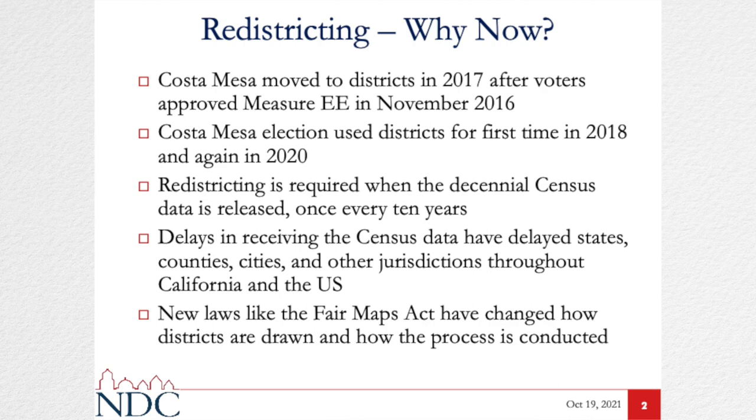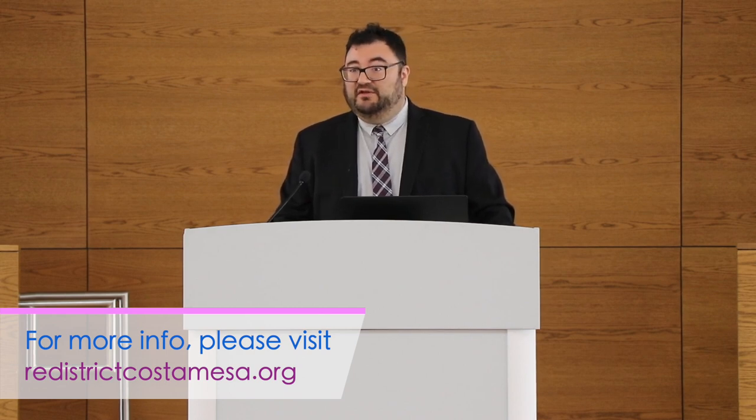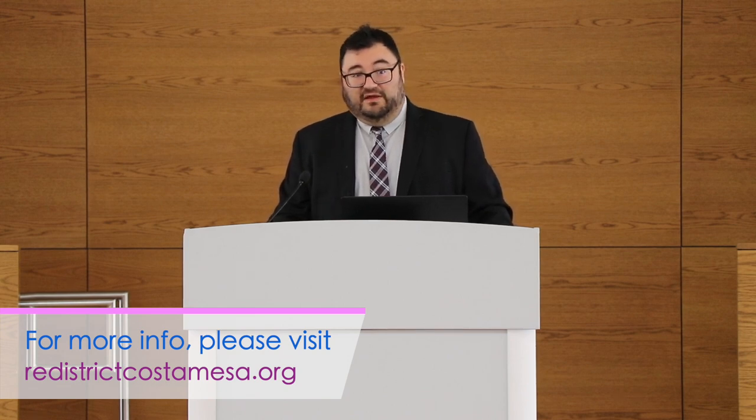The biggest challenge in the process is just the delay in getting started, and it's not the city's fault — everyone got started late this year because the census itself was delayed. Normally we would expect to get census data in March. This year the initial state census data was released in August, nearly five months after it generally comes out. In addition, for the first time the state completed a prisoner realignment where prisoners are counted at their last known addresses rather than the prison blocks. This data set didn't actually come out until September 20th. The counties including Orange County have to be done by December 15th.